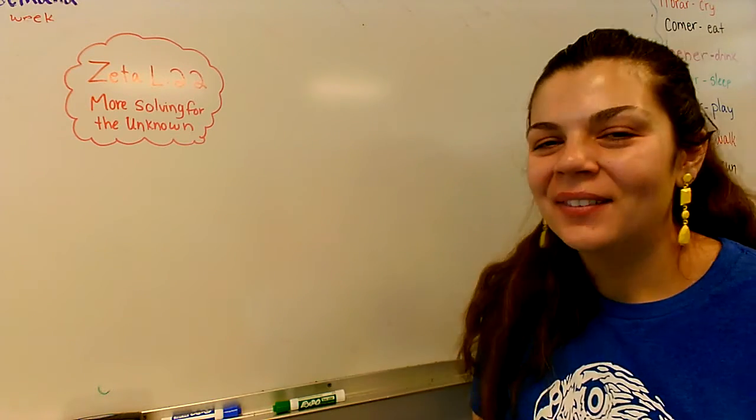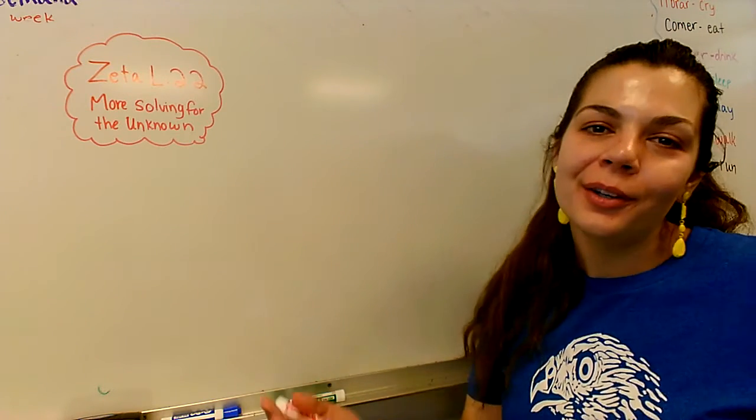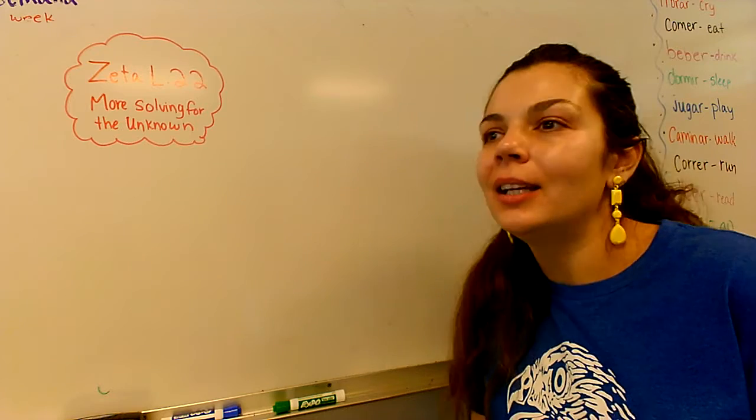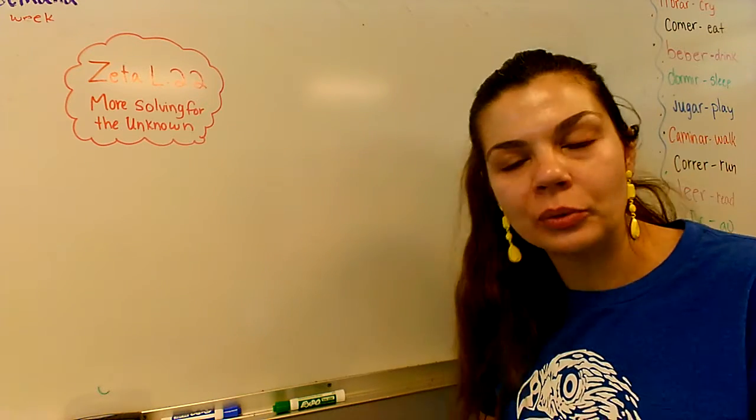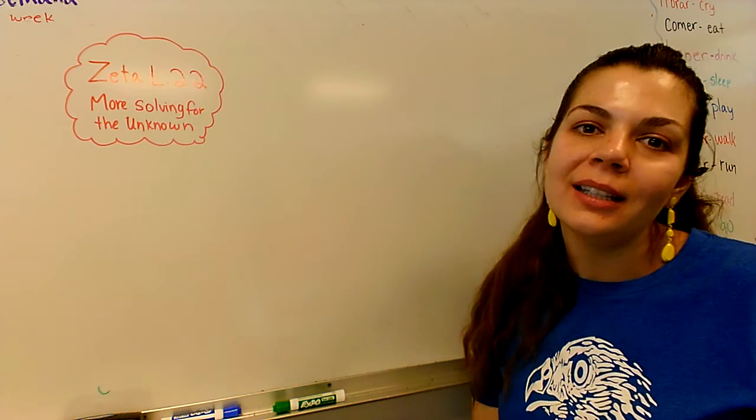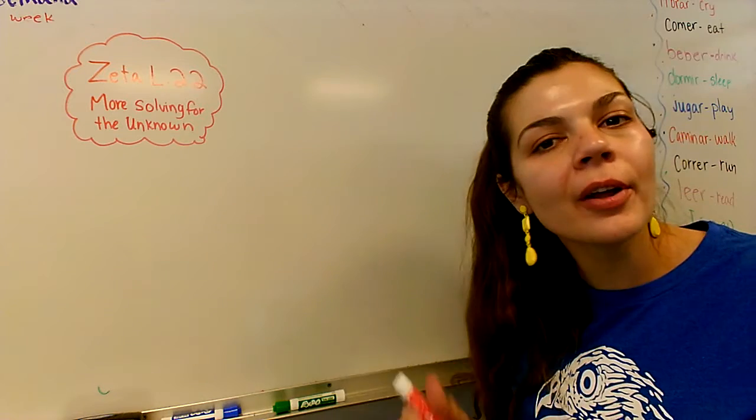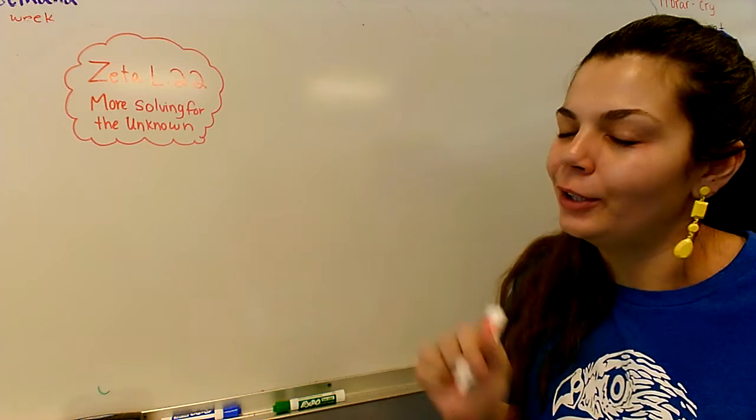I bet that's just what you wanted to do. Well, we know solving for the unknowns, you know, 3x equals 12, x equals 4, 3 times 4 equals 12. So we know how to do that basically. Now we're just going to be doing a little bit more of that with decimals. Woohoo!